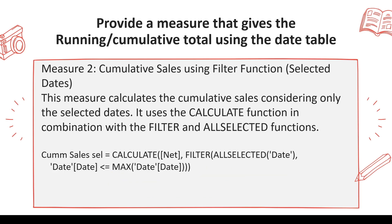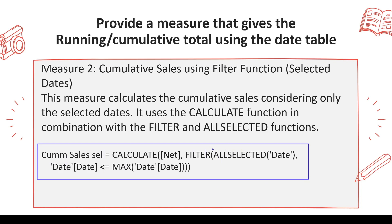The second version uses ALLSELECTED instead of ALL. In the case of ALLSELECTED, it will be a running total or cumulative, but within the selected range. It will not go beyond the boundaries of the selection — the cumulative and running total will be calculated inside the given range.